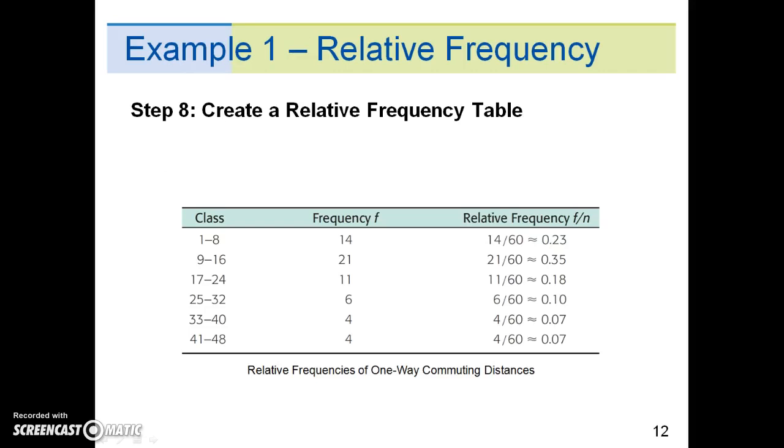Step 8 is to create a relative frequency table. The sample size is n equals 60. Notice that the sample size is the total of all the frequencies. Therefore, the relative frequency for the first class, the class from 1 to 8, is 14 divided by 60, which is about 0.23.